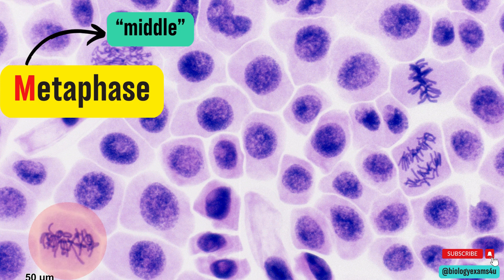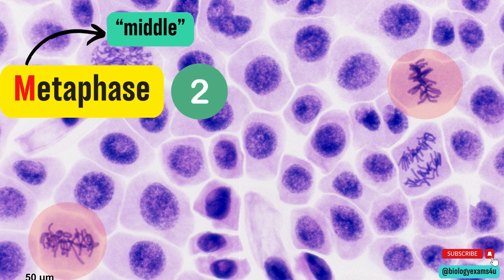So here is one metaphase cell, then here also. Here chromosomal strands are very clearly aligned at the center forming a clear metaphase plate. So the total number of cells in metaphase is two.